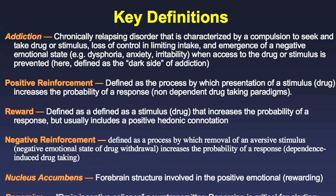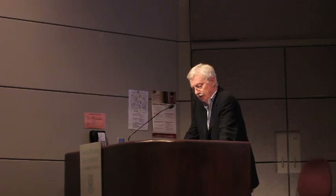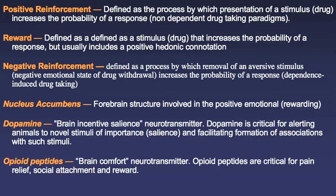Some simple terms: positive reinforcement is where a stimulus or drug increases the probability of a response — think SeaWorld, a dolphin jumping through a hoop, and a trainer slipping the dolphin a fish afterward. Reward is the same thing. Drug withdrawal is aversive; you take the drug to eliminate that aversive state. The nucleus accumbens is a key confluence of circuitry involved in motivation and reward. Dopamine we call an incentive salient neurotransmitter, and opioid peptides I call the brain's comfort neurotransmitters.